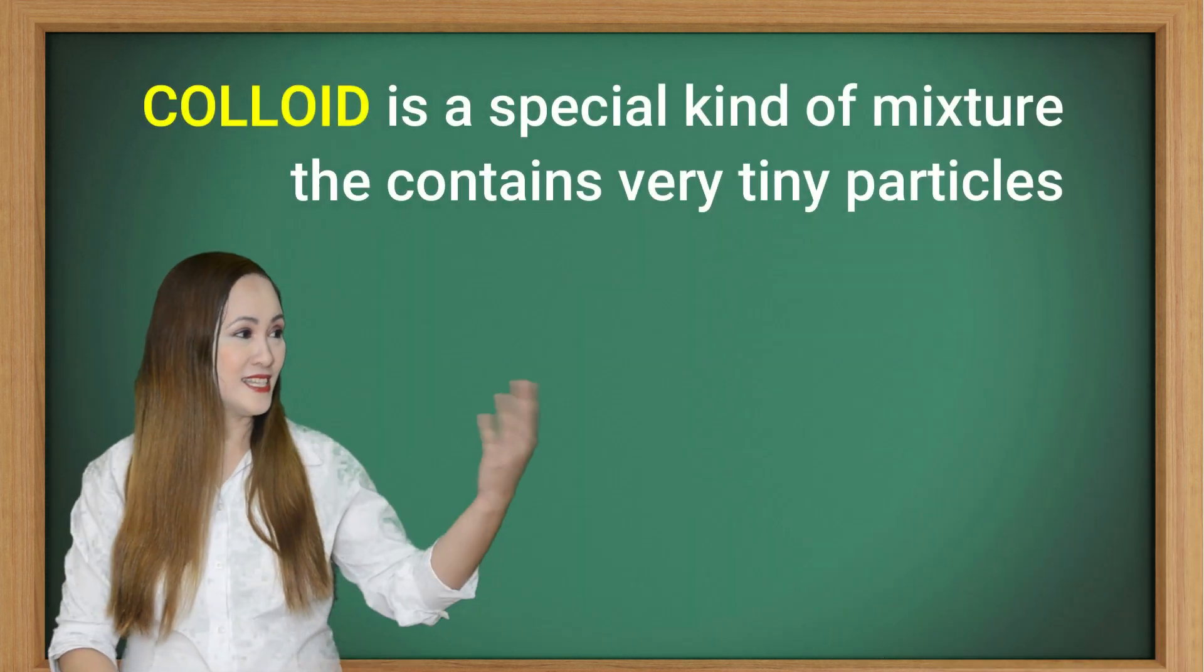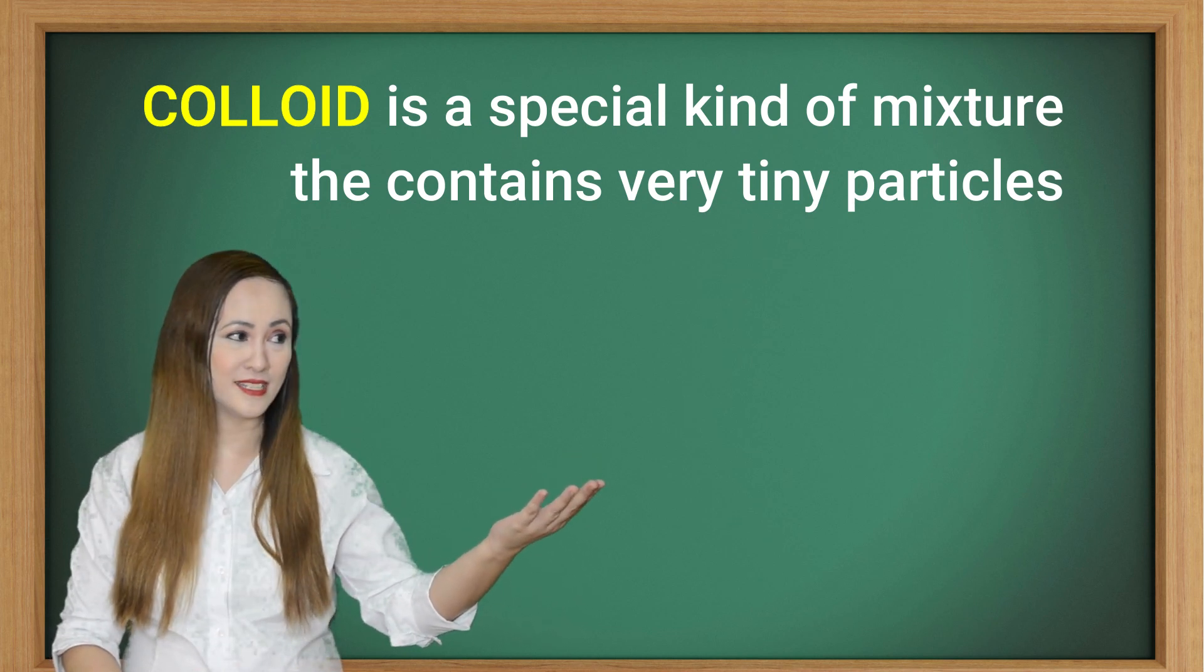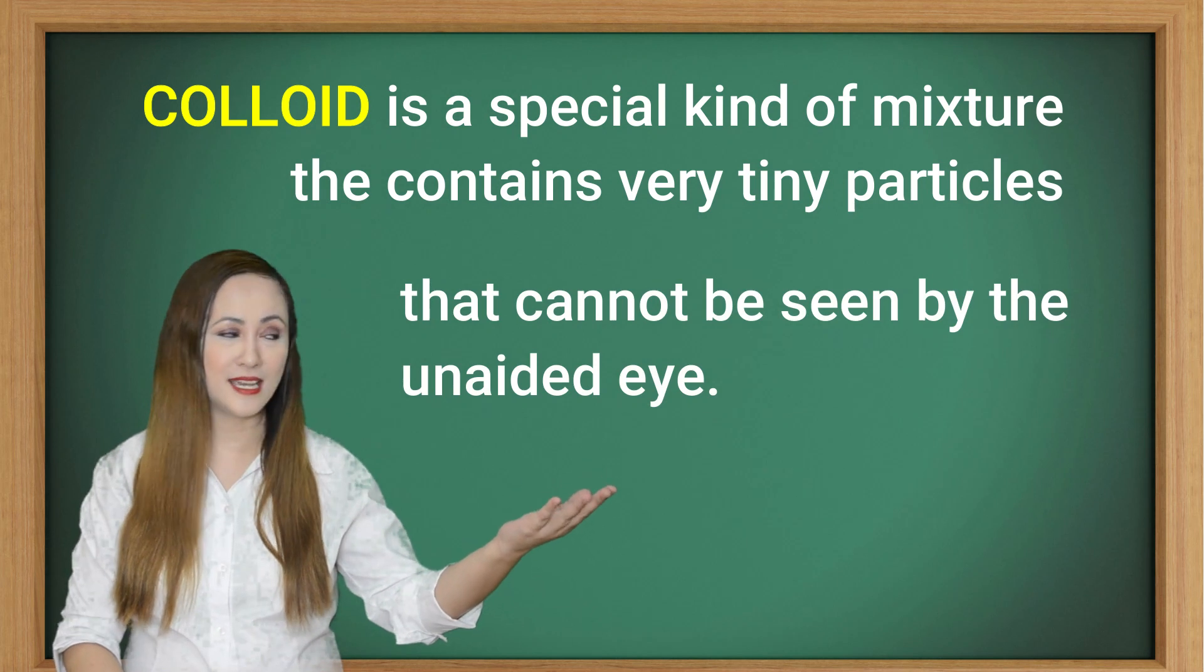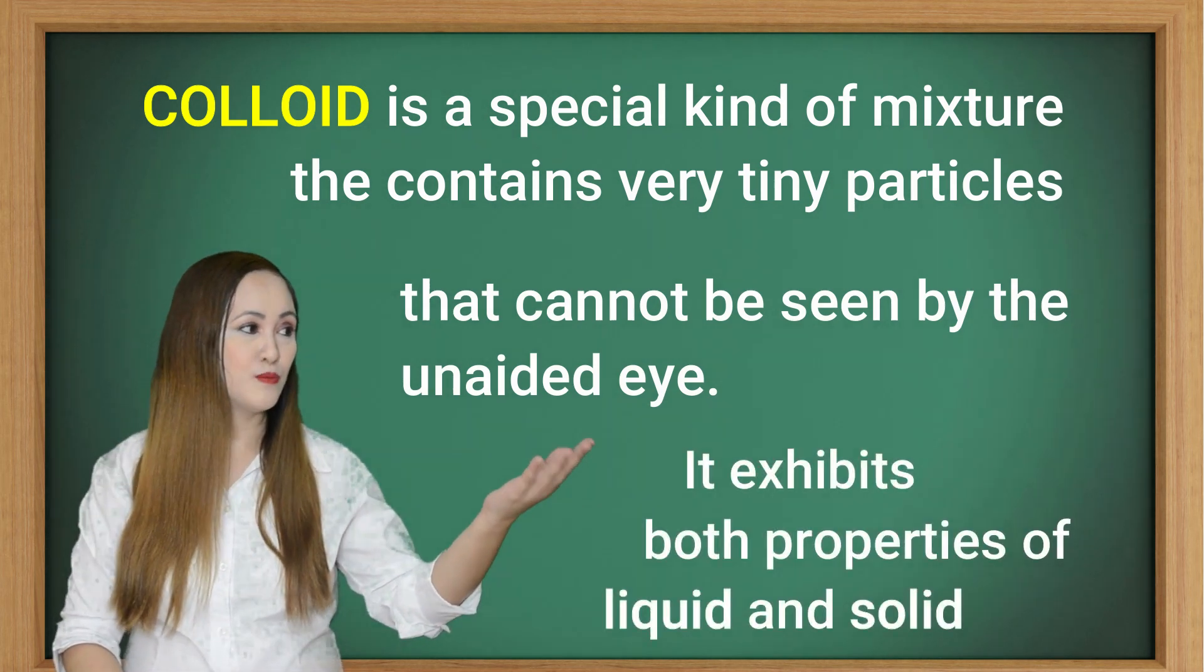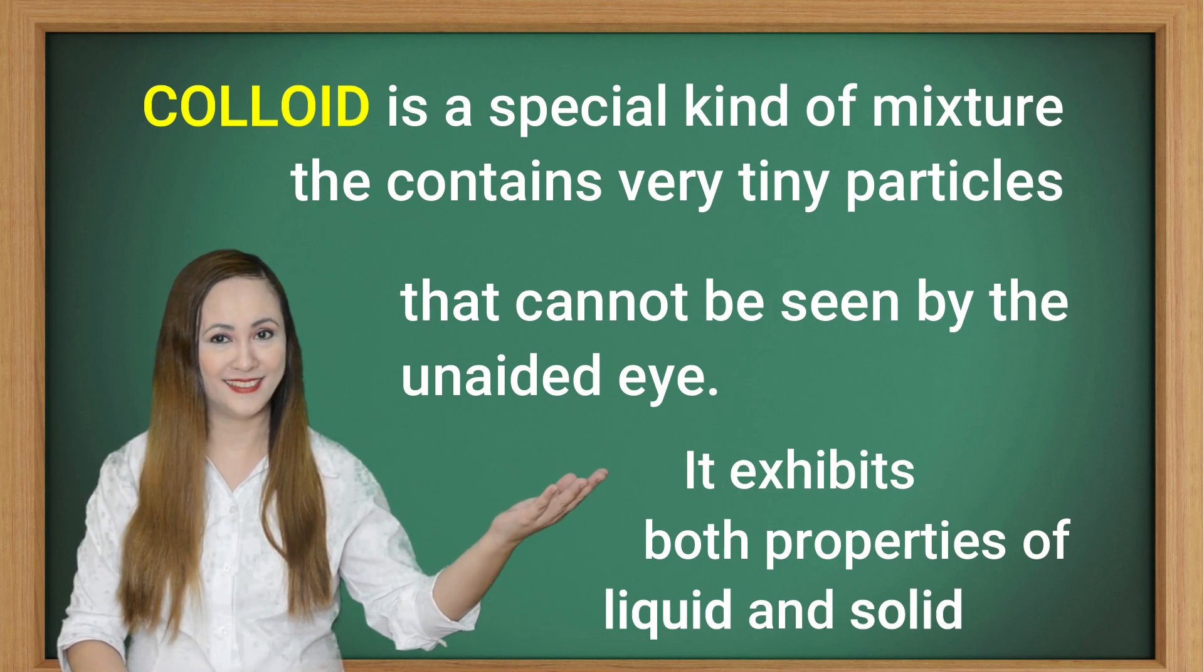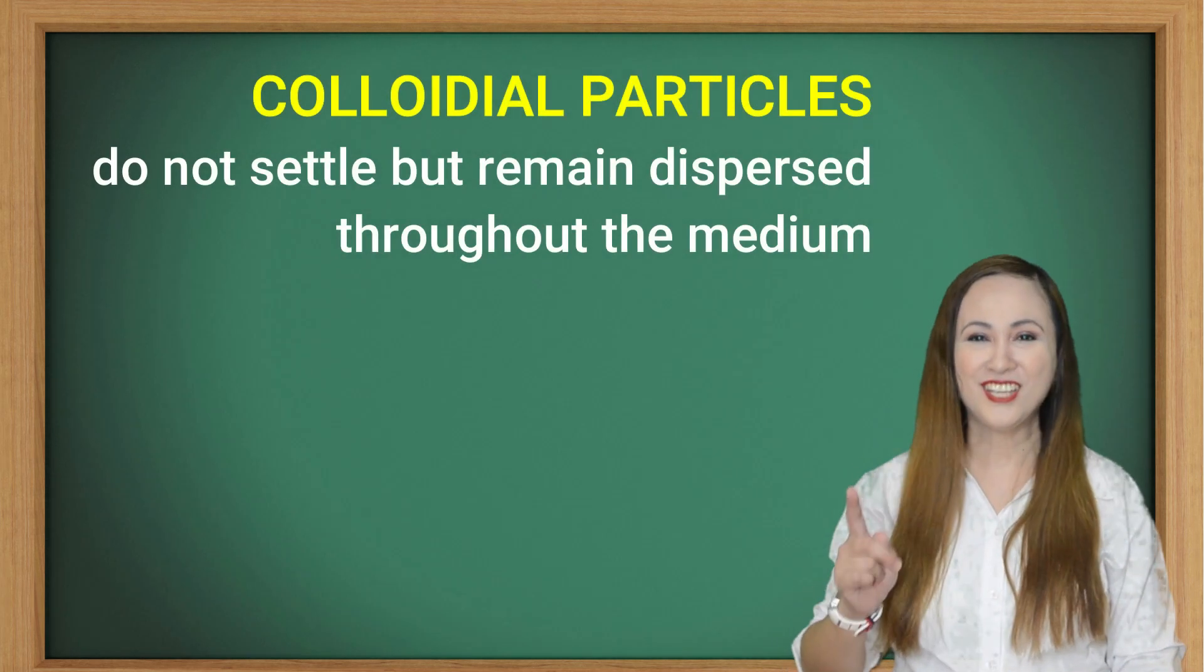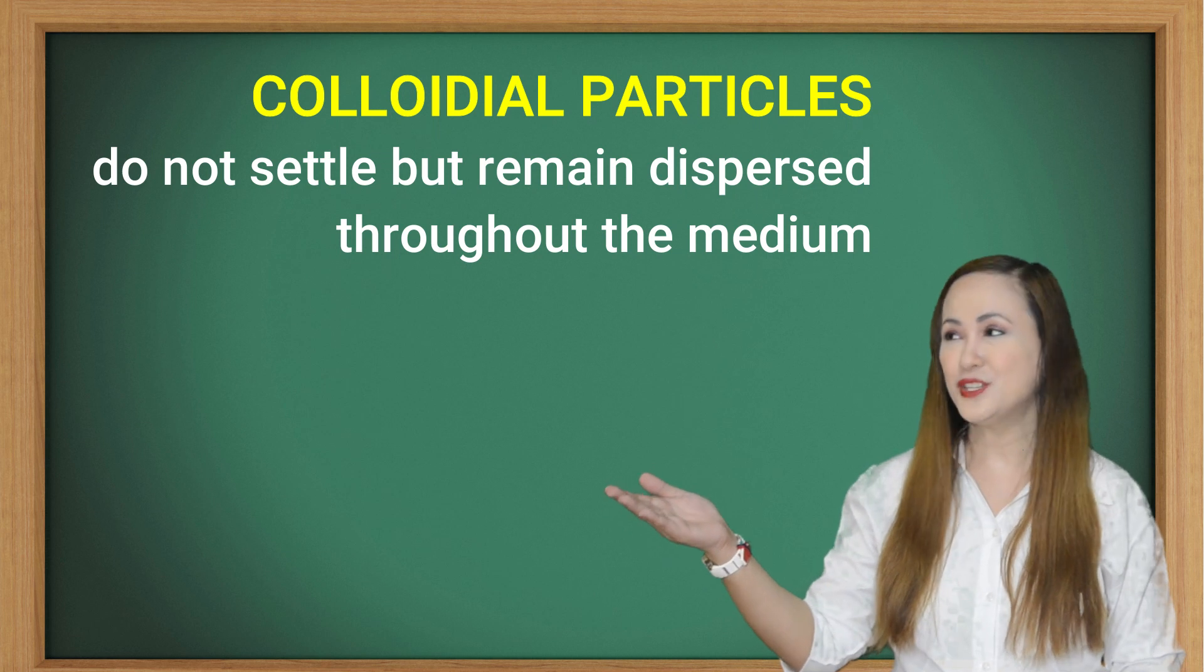So, colloid is a special kind of mixture that contains very tiny particles that cannot be seen by the unaided eye. It exhibits both properties of liquid and solid. Colloidal particles do not settle but remain dispersed throughout the medium.